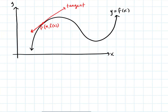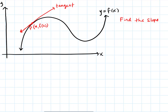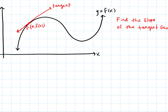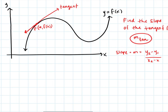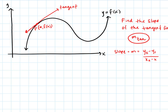So how would we find the slope of the tangent line? We can call that M sub tan. To find the slope of any line, you need two points: M equals Y2 minus Y1 over X2 minus X1. The problem is, with a tangent line, we only have one point — that's what makes it a tangent line. It only hits the curve at a single point. So what do we do? This is where the idea of a secant line comes in.